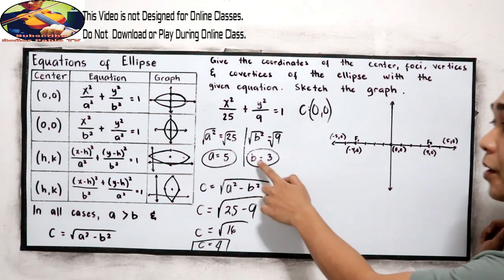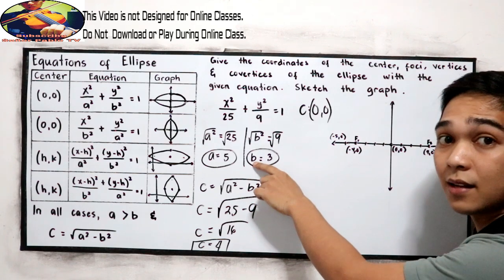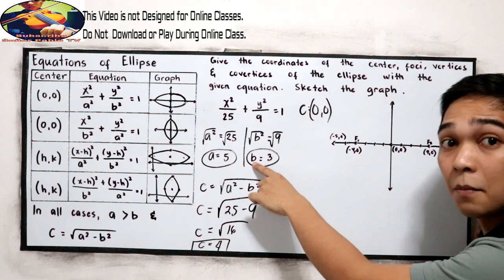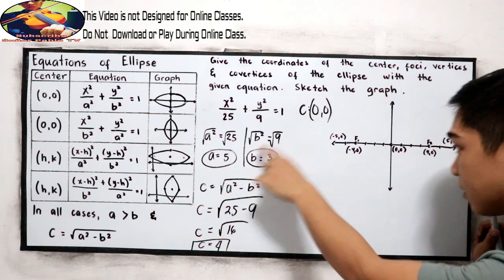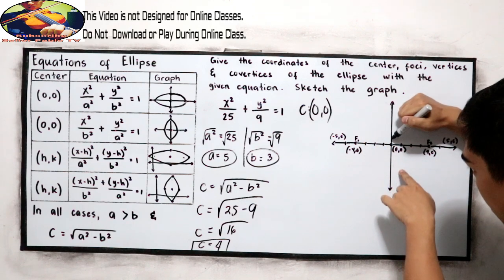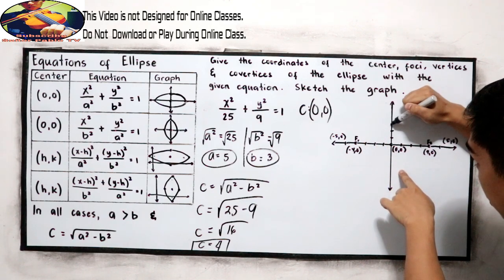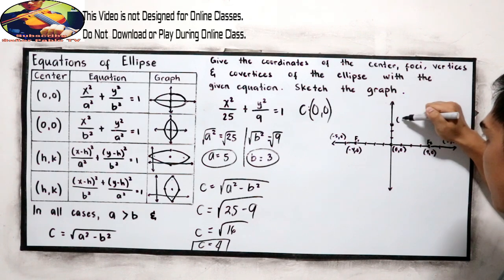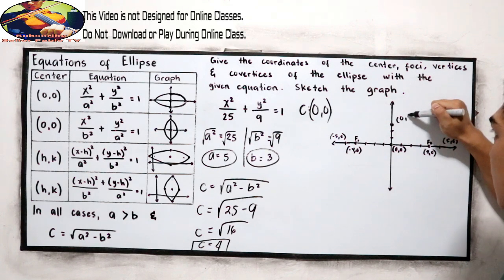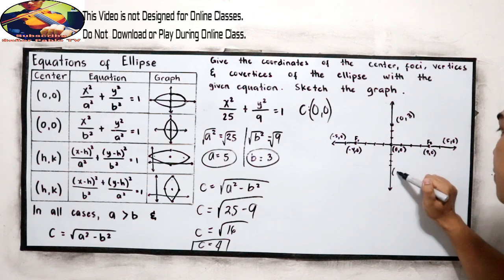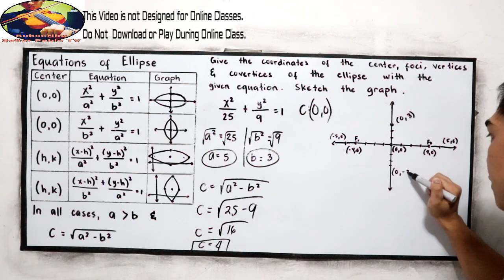And our B — that is the distance of our semi-minor axis — is located on the y-axis. So 3 units up, the co-vertex coordinate is (0, 3), and 3 units down gives us (0, -3).